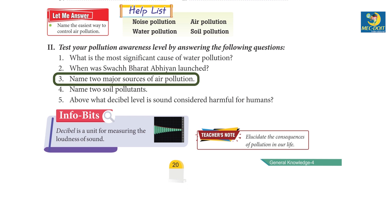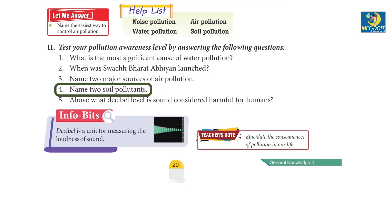3. Name two major sources of air pollution. 1. Mobile sources. 2. Stationary sources. 4. Name two soil pollutants. Garbage, plastic bottles.